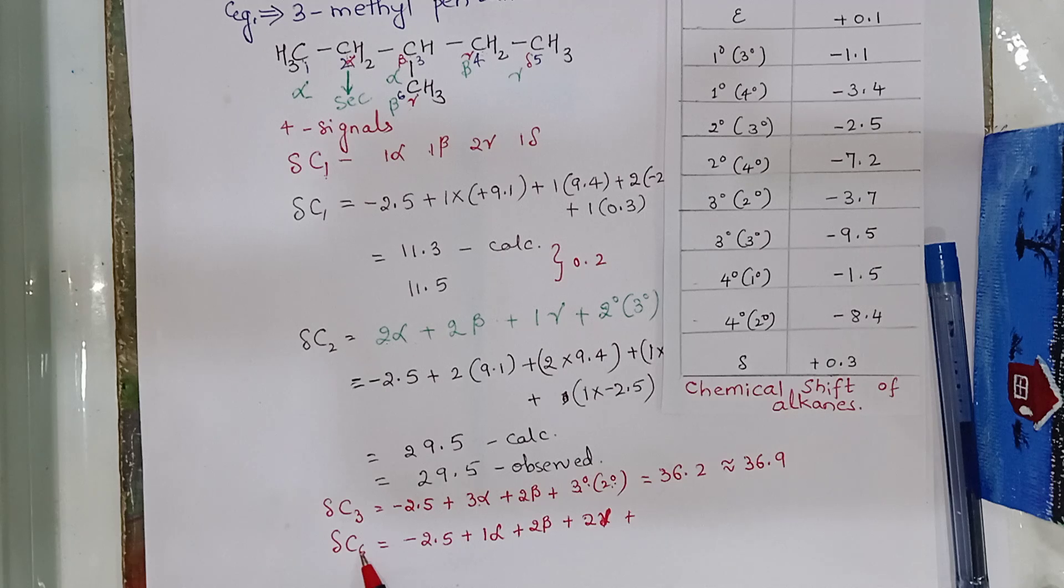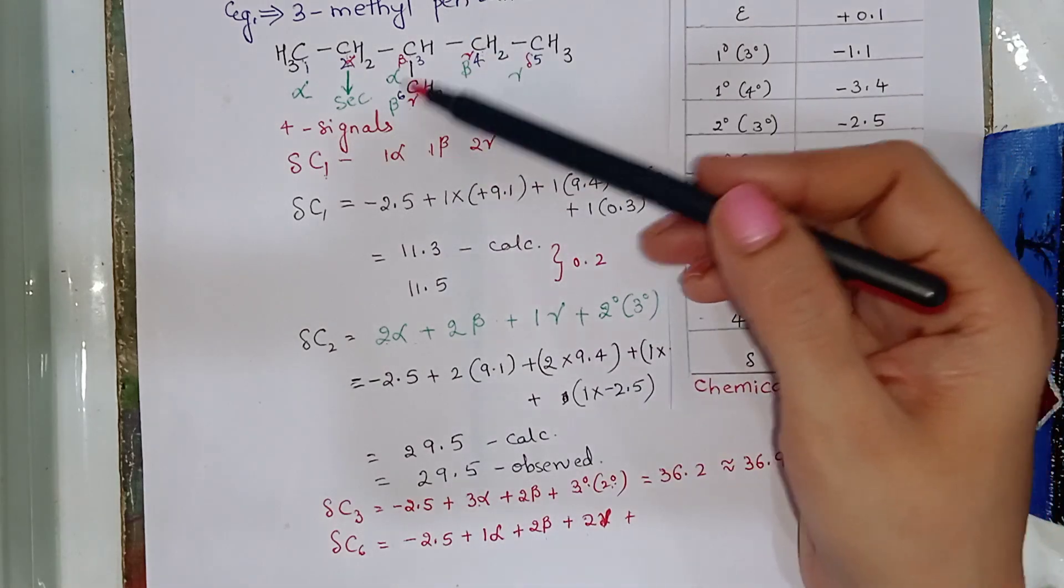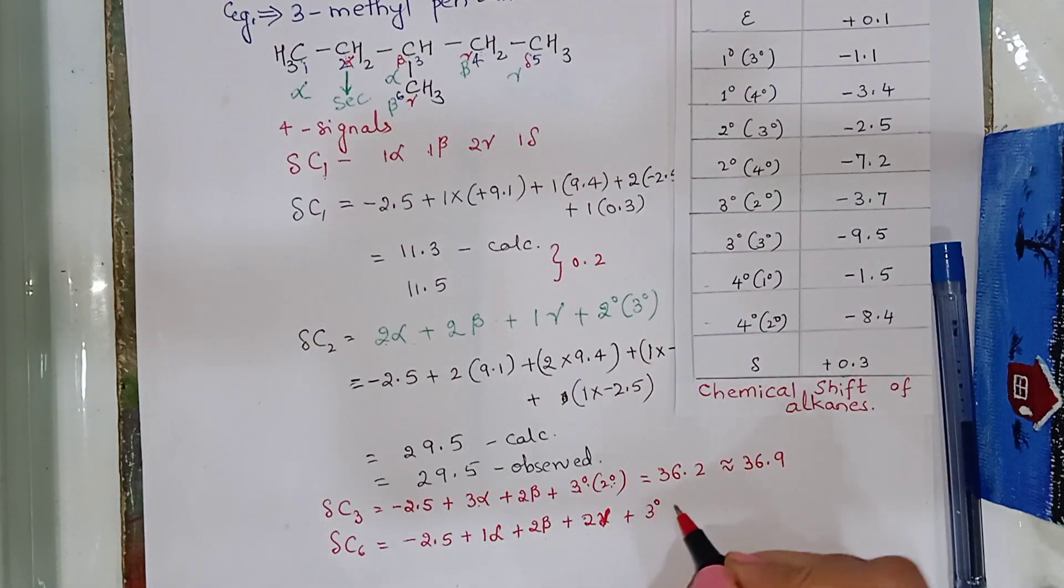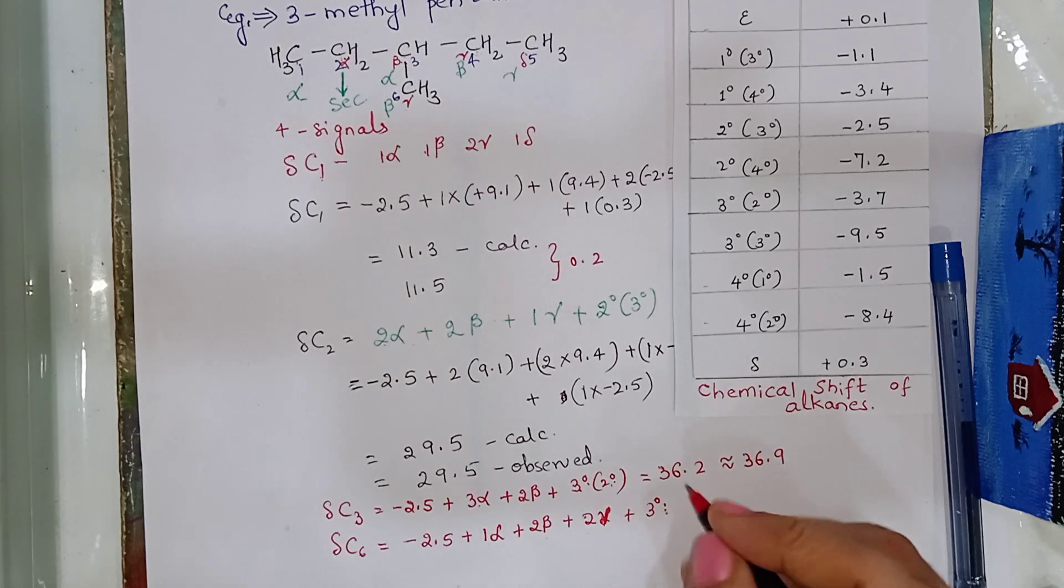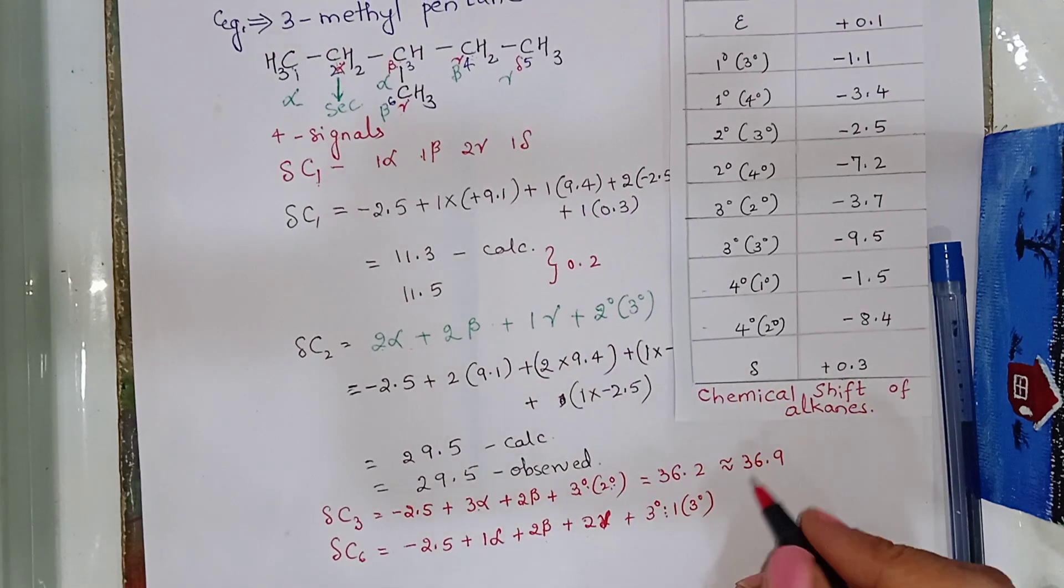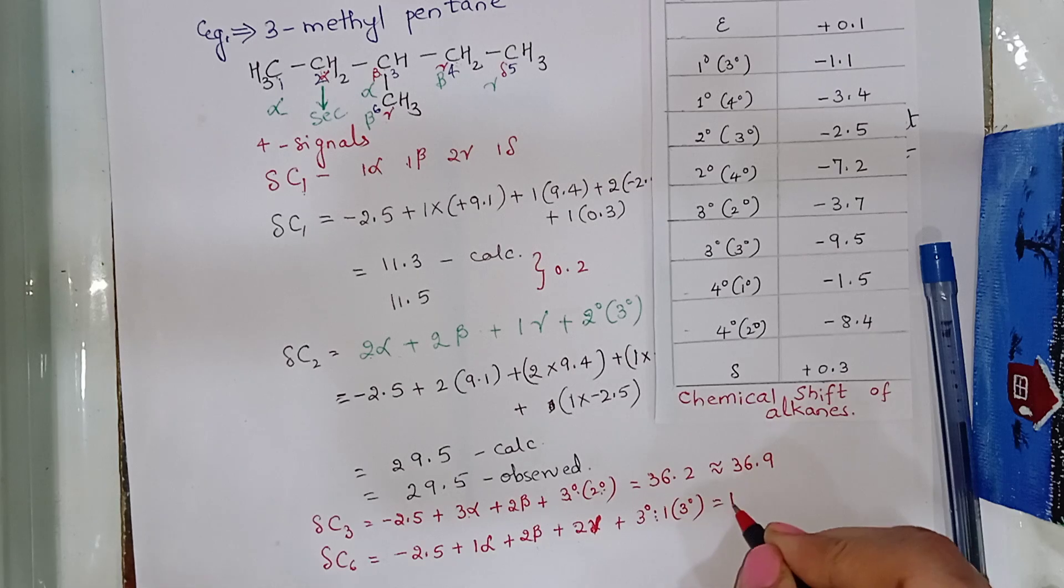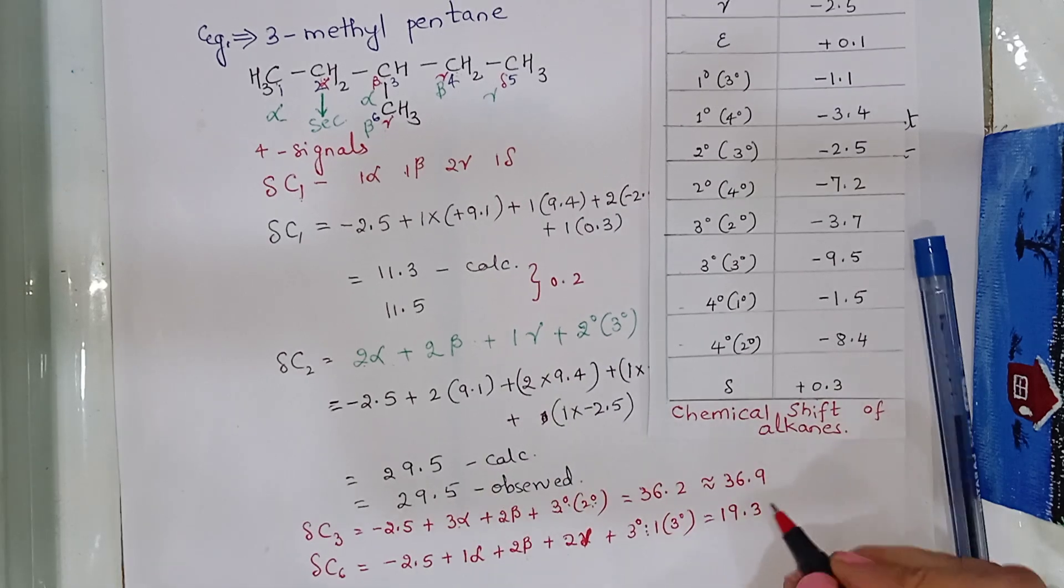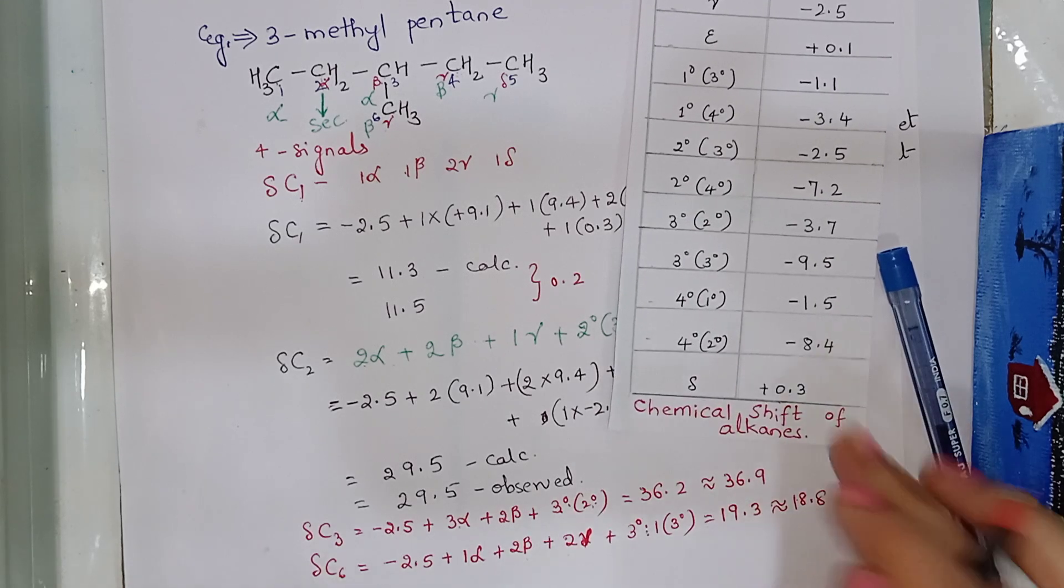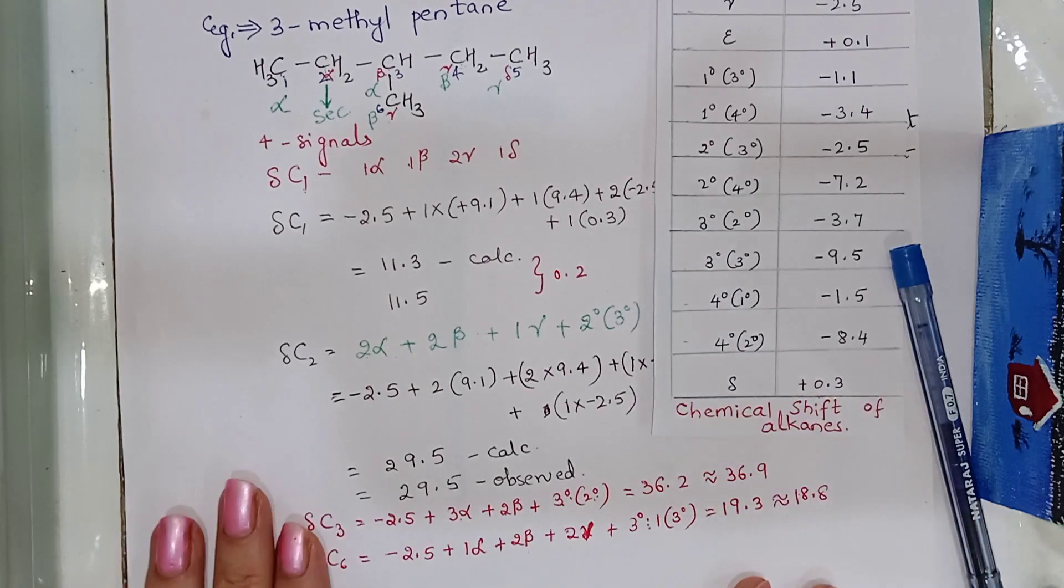Chemical shift for carbon 6 will be base value minus 2.5 plus it has got 1 alpha carbon, 2 beta carbons, 2 gamma carbons and it is itself is a primary carbon attached to 1 tertiary carbon that is 3 degree, 1 is to 3 degree. So, on calculation, it is observed that it is 19.3 which is very much near to the experimental value that is 18.8. So, again, these calculations are valid.